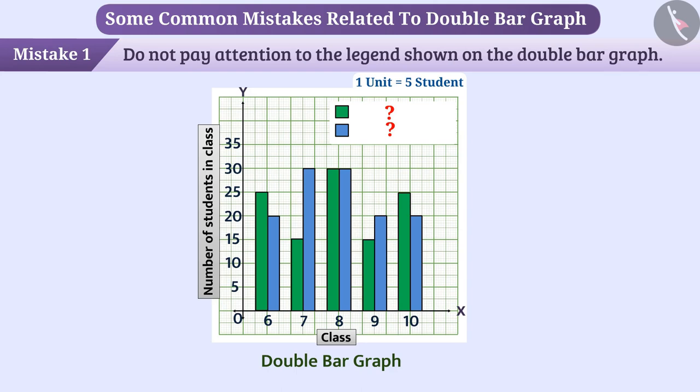Keep in mind that it is necessary to show what the bars represent when drawing the double bars. As such, it is necessary to show here that the green bar represents the number of girls and the blue bar represents the number of boys.